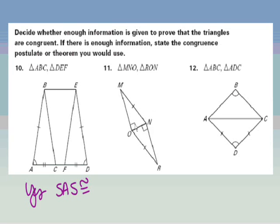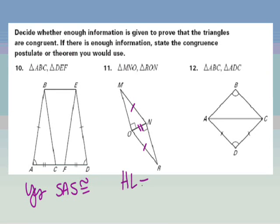Looking at the next pair: I've got right triangles, they share a side, and these sides are congruent. When I see right triangles, the first thing I should think is: do I have hypotenuse-leg? Sure enough, these are the hypotenuses — each triangle has a hypotenuse congruent to the other's, their legs are congruent, and they are right triangles. So yes, they are congruent by hypotenuse-leg.